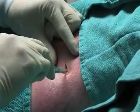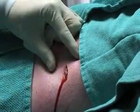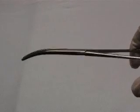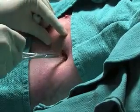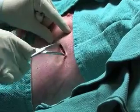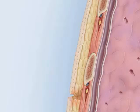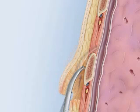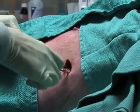Make an incision approximately 1.5 to 2 centimeters in length above and parallel to the anesthetized rib. Introduce the curved dissecting instrument, such as a Kelly clamp, into the incision. Begin dissecting the subcutaneous tissues in order to reach the intercostal muscles. After dissecting through the subcutaneous tissues, stay on top of the rib to guide the blunt dissection. This will create a diagonal path towards the correct intercostal space.